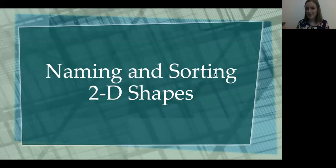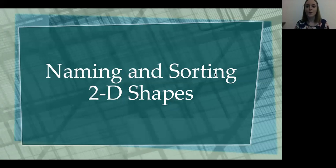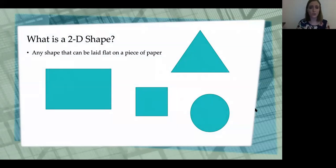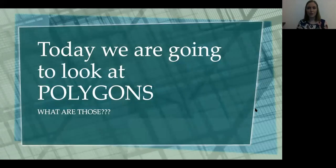We're combining some things mainly because you were really picking up on it — you did some activities like that already in grade two. So we're going to push forward and get through some more things; we have lots of work to do. So we're going to look at 2D shapes today. You've talked about these in your other grades so this will be brief. What is a 2D shape? A 2D shape is something that can be laid flat on a piece of paper — it's just flat. Some of our 2D shapes are triangles, circles, squares, rectangles, things like that.